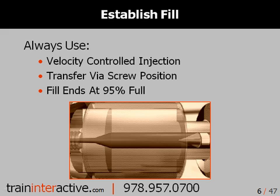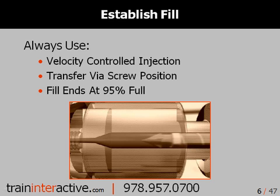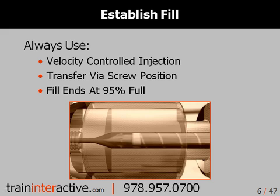Proper fill establishment is critical to any injection molding process. Many injection molders we visit have no formal procedure to establish a proper fill. Furthermore, documentation of the fill is very seldom documented. Unless you have a molding machine with an open-loop process control system, you should always use velocity-controlled injection, transfer via screw position, and fill ends at 95% full.